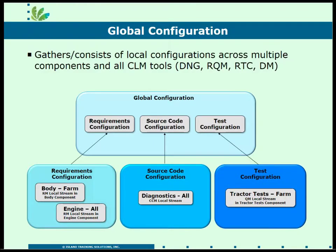Global configuration is a higher-level stream, and you have the ability to name those streams anything you want. What a global configuration stream says is: I consist of streams from each of the requirements across my entire product line. So I may have two components in DNG — one for the body of the tractor, one for the engine of the tractor. Each has its own stream.